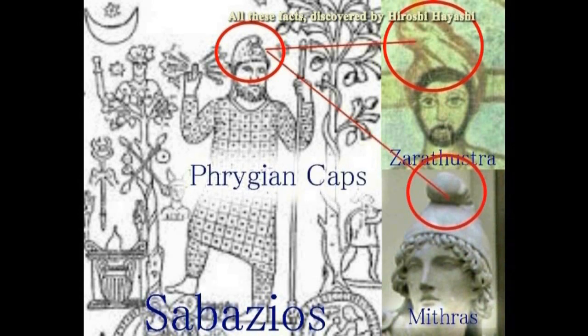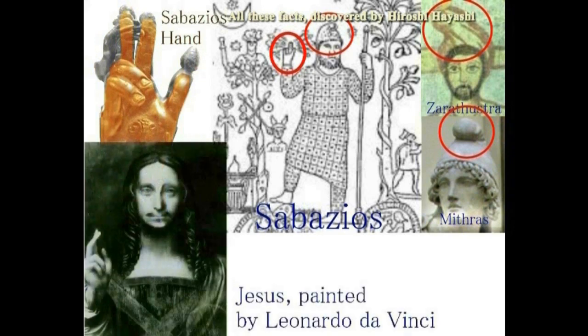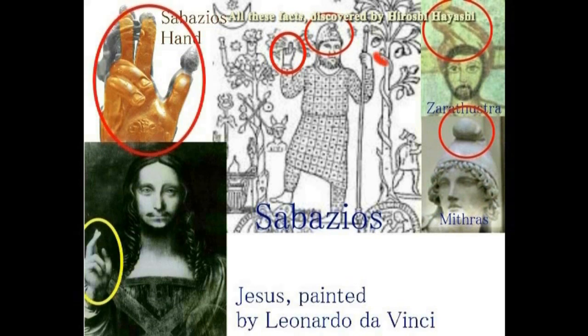つまりイエスがサバジオスの手をしているということは、現在のローマンカトリックにとっては極めてまずいことになります。ローマ国教となると同時に、カトリックは徹底的にミトラ教そしてゾラスター教を悪魔教と位置づけて弾圧しています。左がサバジオスの手であり、同じ手をイエス自身がしています。左下の像はレオナルド・ダ・ヴィンチなる画家が描いた絵と言われています。